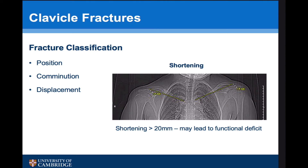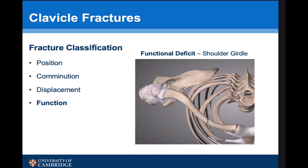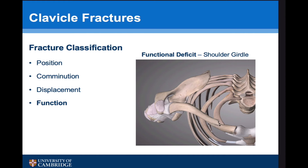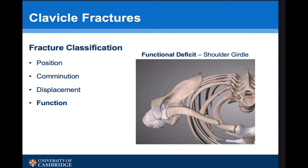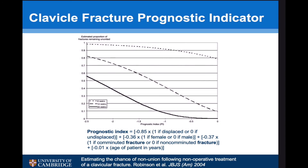Shortening isn't the only component — there is also the issue of functional deficit that is not generally appreciated on a plain X-ray. For example, if we have a fracture in a given spot, there may be an element of shortening, but no imaging truly shows how displaced or protracted the fracture is. Exactly the same fracture configuration can cause greater issues with scapulothoracic function depending on how it lies. A lot of my decisions regarding fixing clavicle fractures aren't just based on the X-ray — it's very important to examine the patient to see exactly what's happening with their scapula. There is a useful prognostic indicator written up by Mike Robinson, by which you can input a number of factors to assess the likelihood of a fracture going on to non-union.